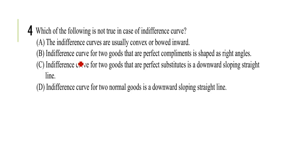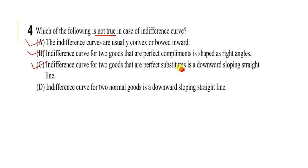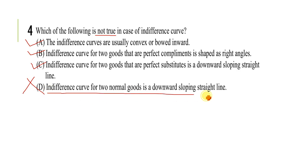Next question: which of the following is not true in the case of indifference curves? Option A: indifference curves are usually convex or bowed inward — correct. Option B: indifference curves for two goods that are perfect complements are L-shaped — correct. Option C: indifference curves for two goods that are perfect substitutes are downward-sloping straight lines — correct. Option D: indifference curves for two normal goods are downward-sloping straight lines — this is wrong. Normal goods have convex curves, not straight lines. So D is the correct answer.